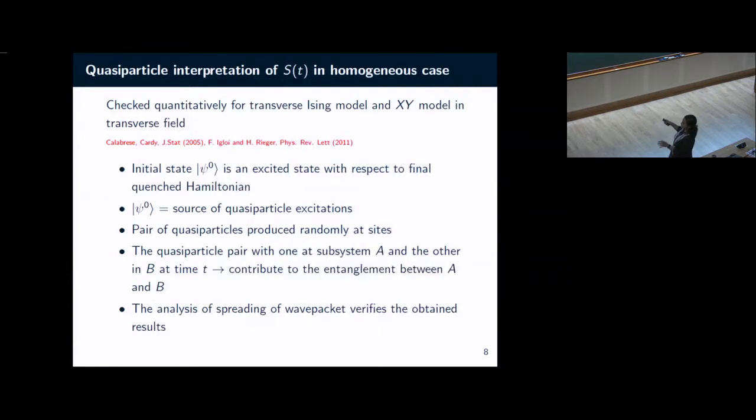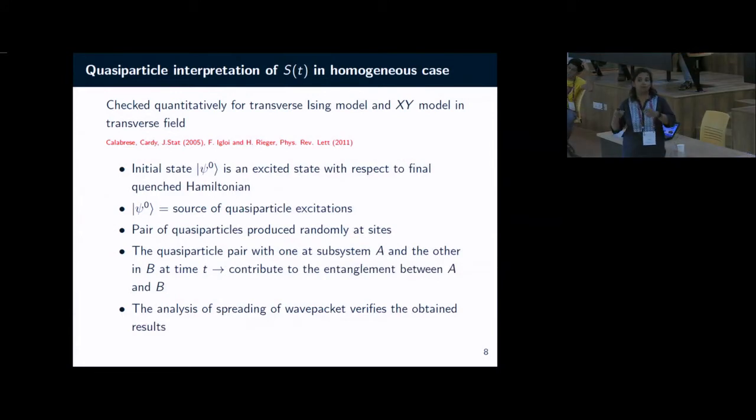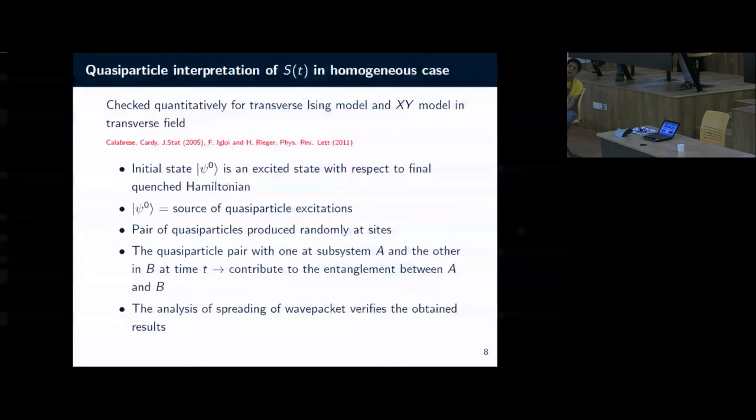The two subsystems A and B will be entangled if one of the quasiparticles of a pair is in A and the other is in B. But in this particular case, how we looked at it is we basically looked at how, if you have a wave packet, we borrowed the calculation which is done for quasicrystals, the transport of electrons in quasicrystals.